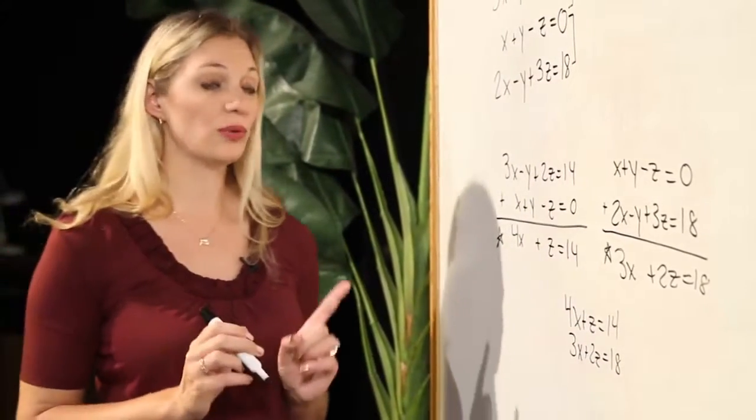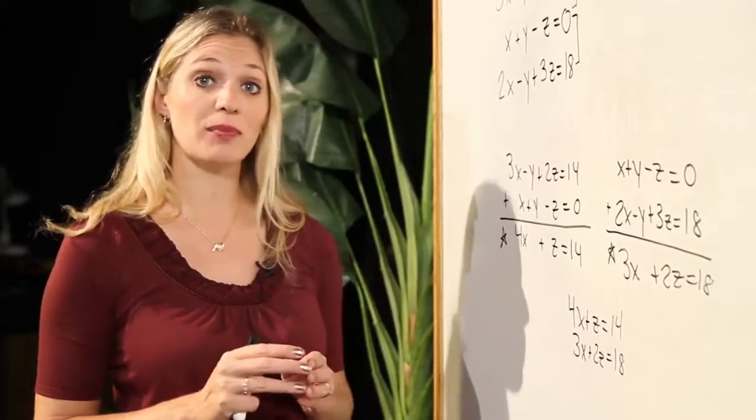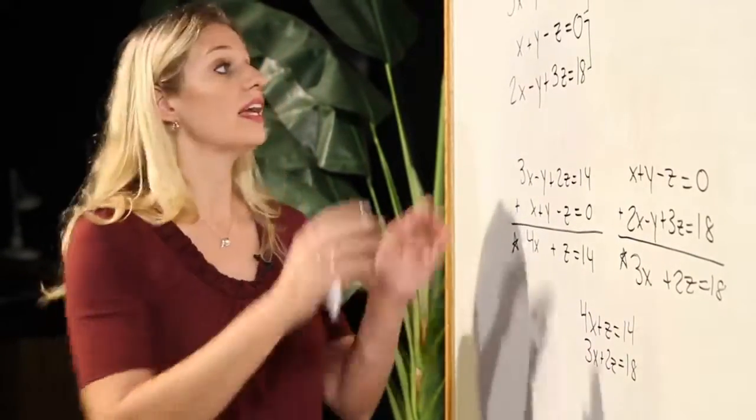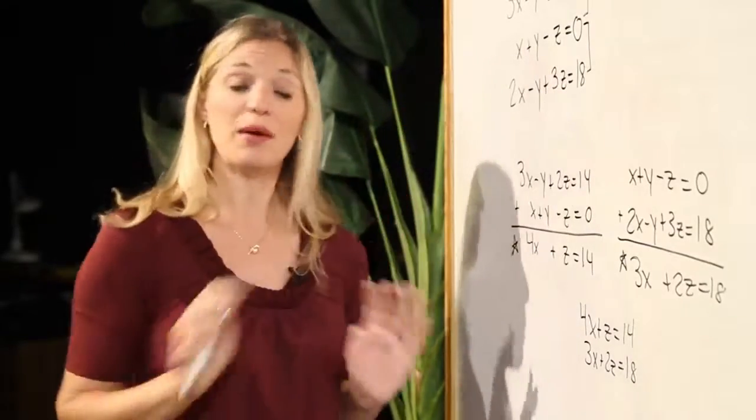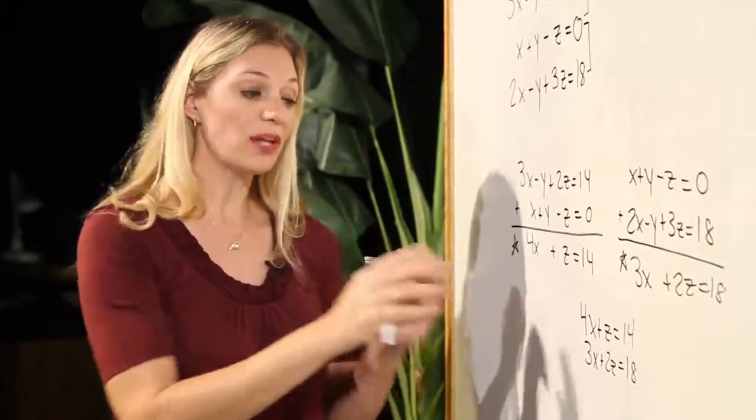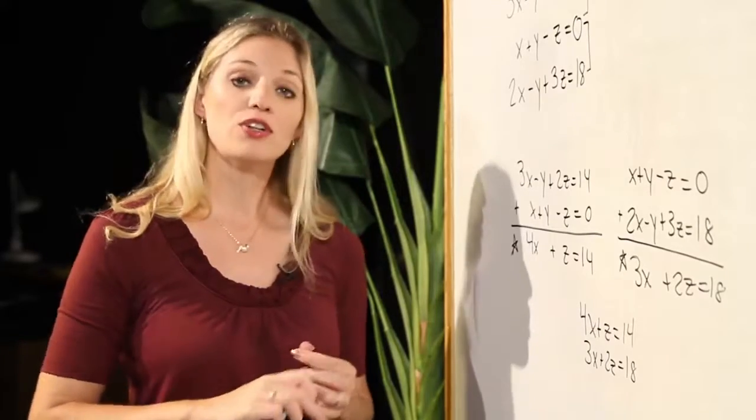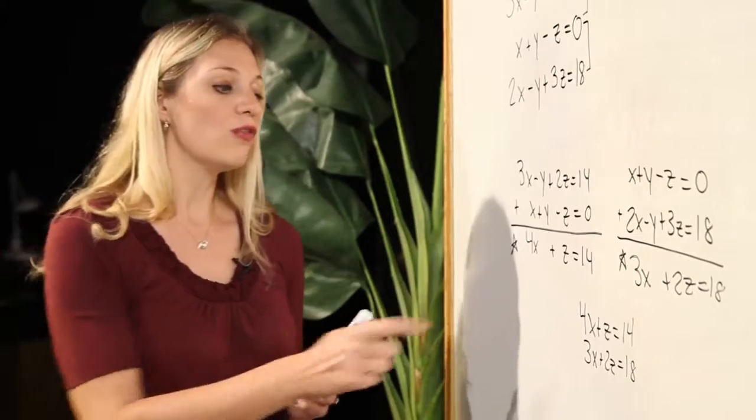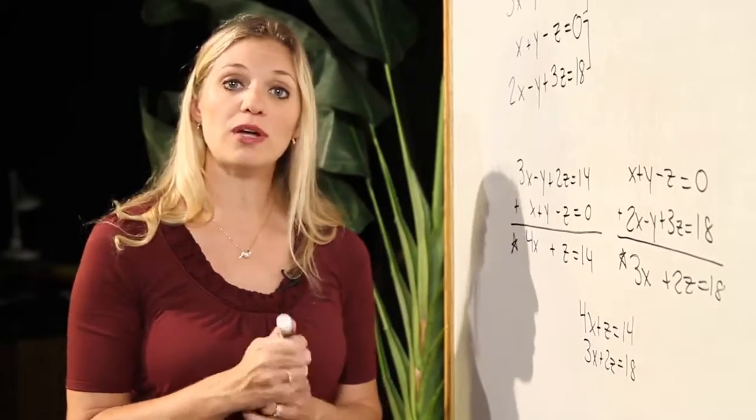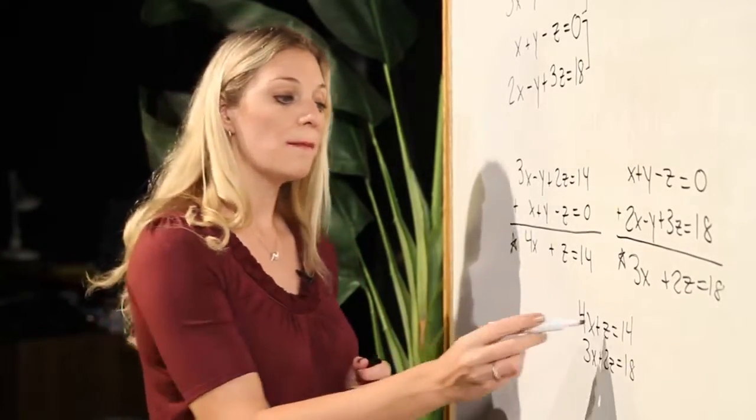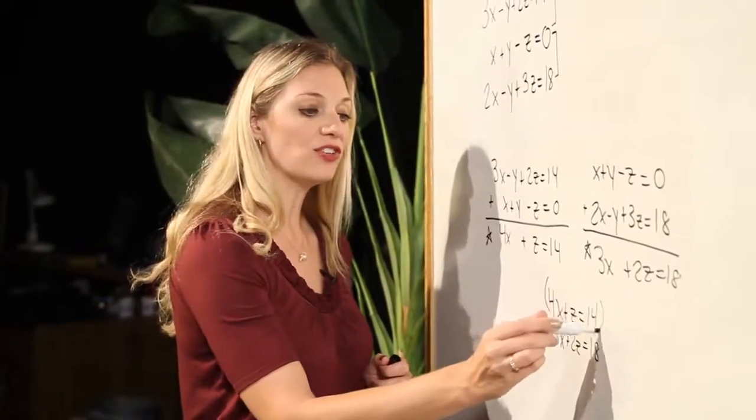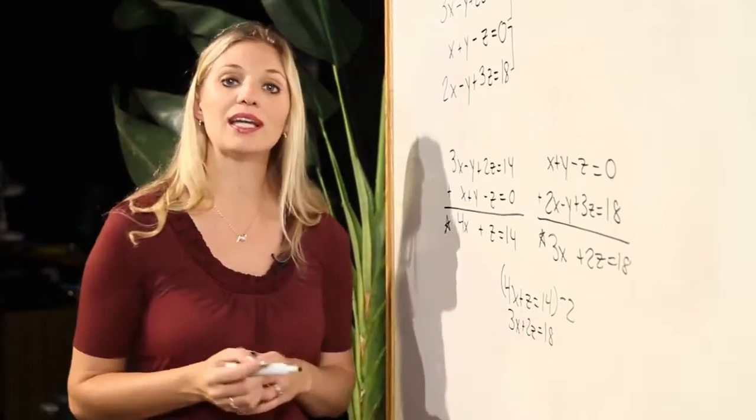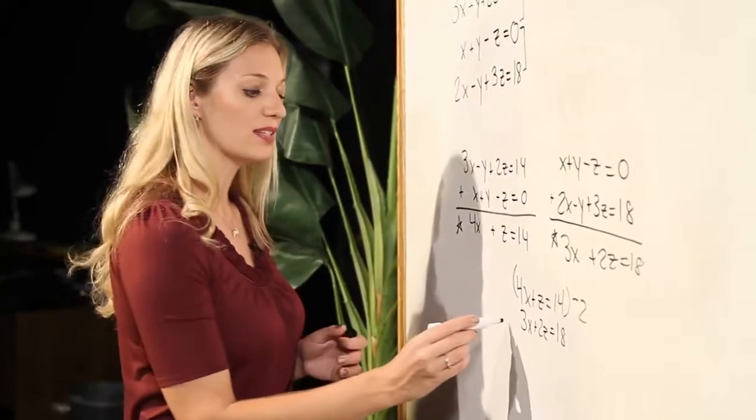Now in order to add these together and to get a variable to eliminate, I need to have like coefficients with opposite signs. Now with the y's in the first step, that was already given to us, but we don't have a matching pair here. So we're going to have to multiply through by something in order to make this happen. If I just multiply the top equation by a negative 2, I will quickly get like coefficients with opposite signs.